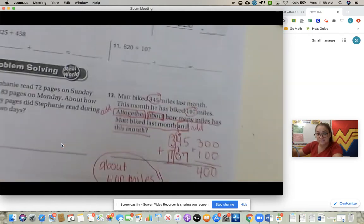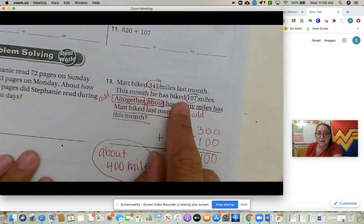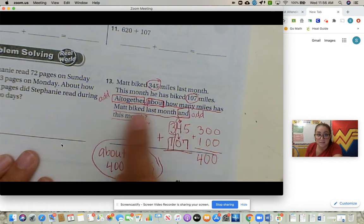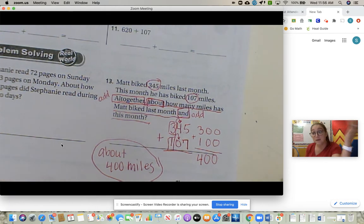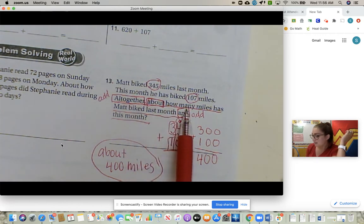So first you need to read it. Matt biked 345 miles last month. This month he has biked 107 miles. Altogether, about how many miles has Matt biked last month and this month? I talk about visualizing. I have a brother named Matt, so I'm picturing my brother riding a bike. I'm picturing him riding it in front of the ocean because I love the ocean. He's so tired. A month later he goes back again and rides many more miles on the coast. And then I think to myself, about how many miles did he ride? So I underline the question: altogether about how many miles has Matt biked last month and this month. That's my underline.